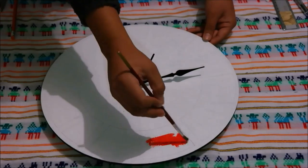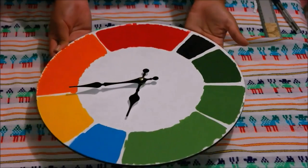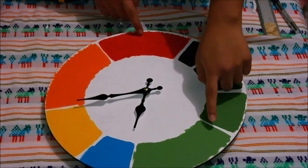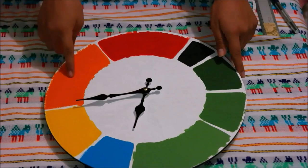Each section will be painted of a different color and this is the order. From 12: red, black, dark green, medium green and light green, blue, yellow and orange.